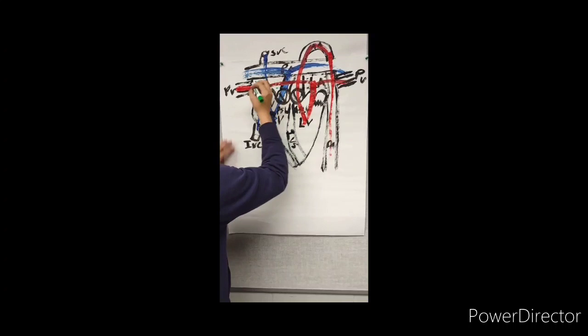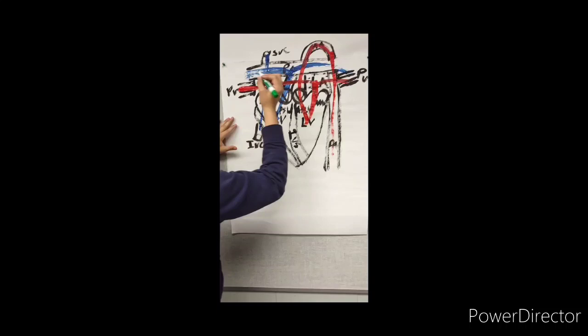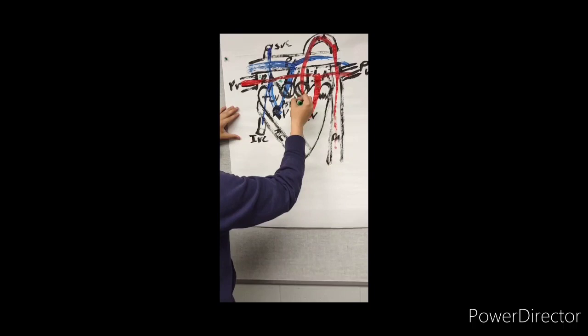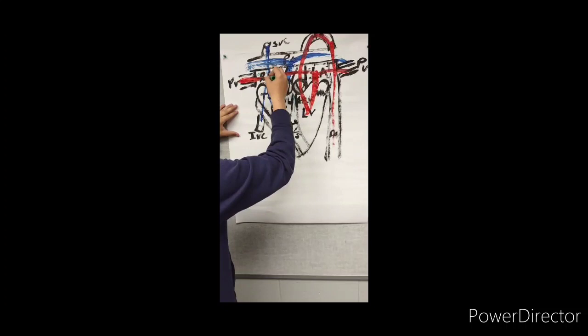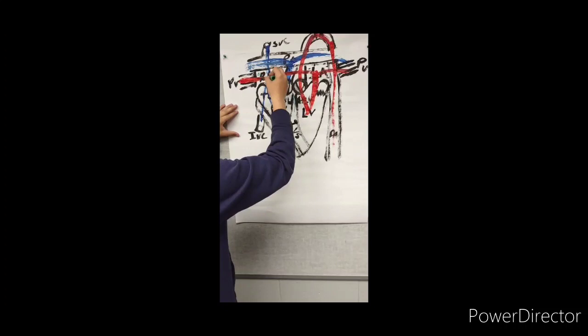The electrical impulse of the heart starts at the SA node, which is right here, and goes to the AV node, which is right here. The AV node then sends the signal to the intraventricular septum into bundles. The bundles then go down to the myocardium and reach the Purkinje fibers, which are right here.